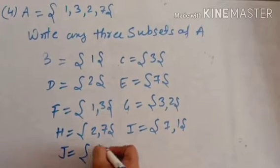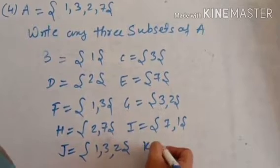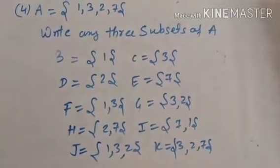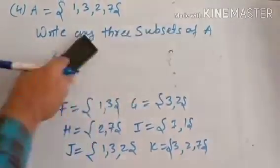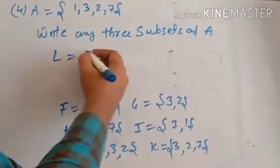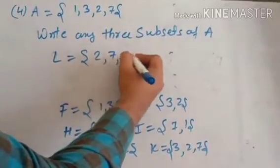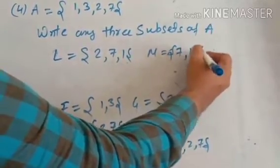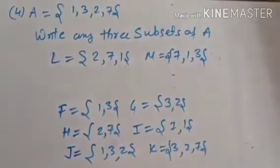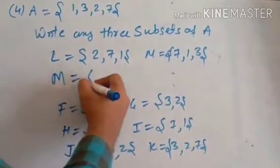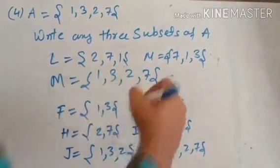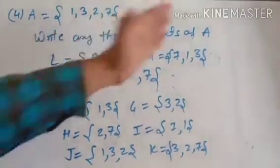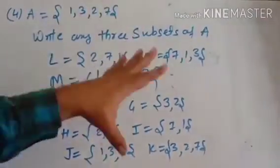After that we take groups of three. J = {1, 3, 2}, K = {3, 2, 7}, L = {2, 7, 1}, M = {7, 1, 3} are subsets of A. Then taking all four numbers: {1, 3, 2, 7} is also a subset of A. So there are a lot of subsets of A. We write any three subsets from this — you take any three subsets and write them in the exam.